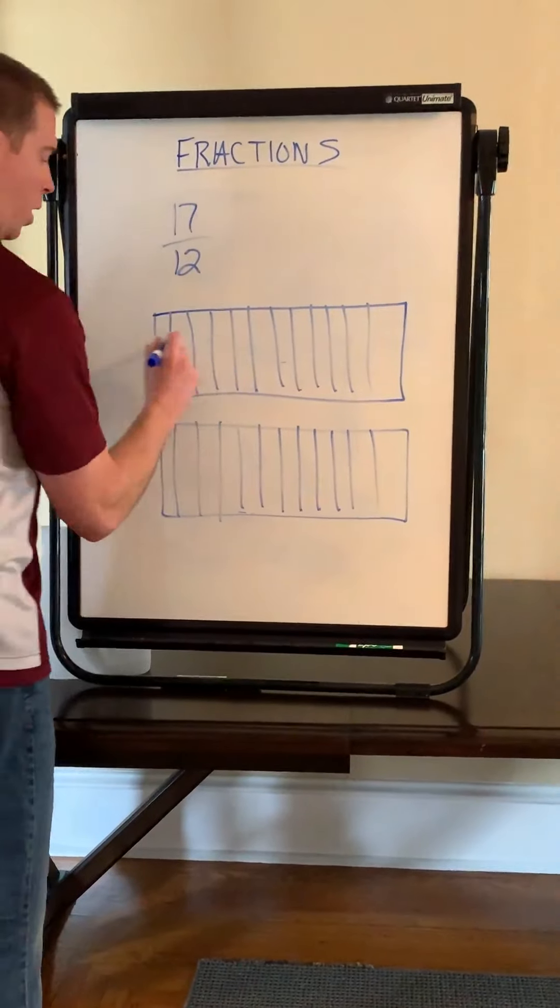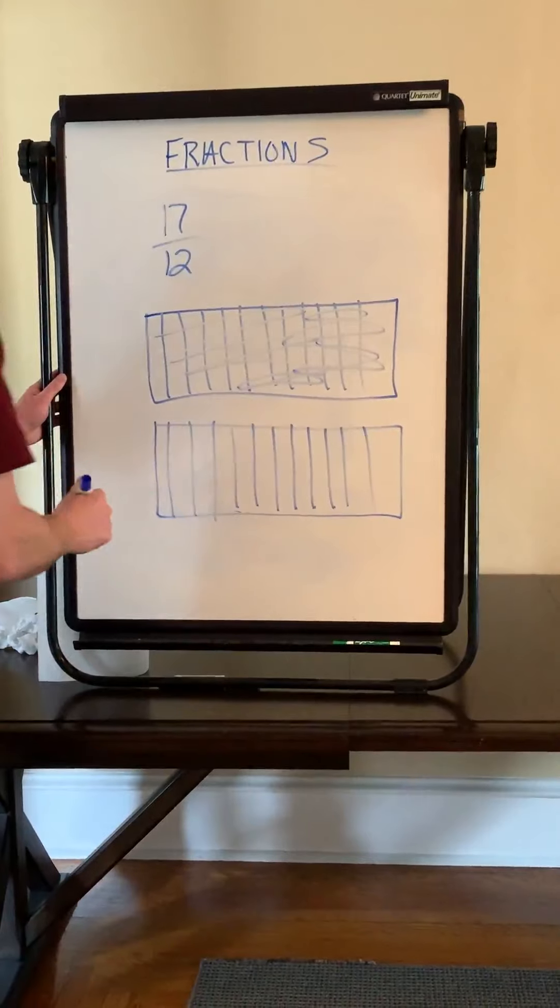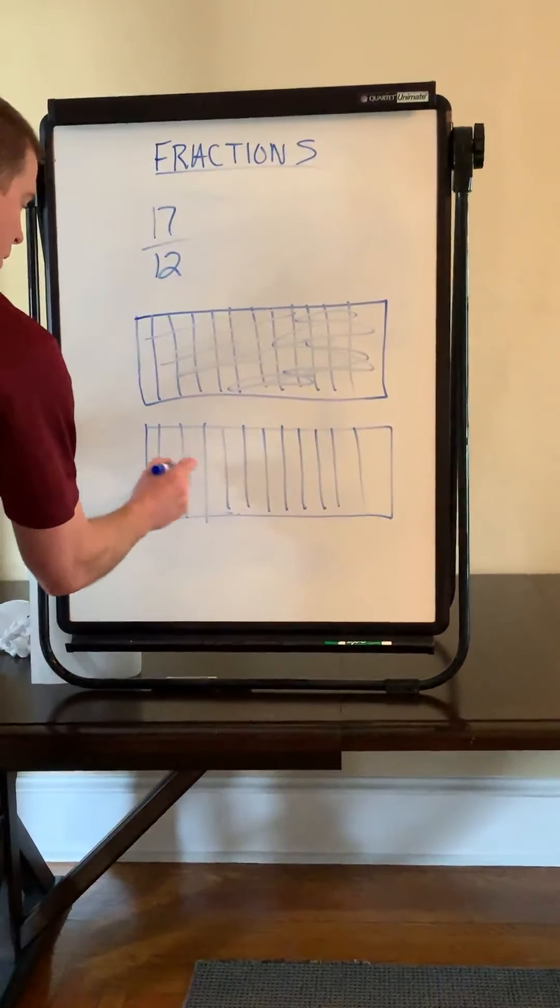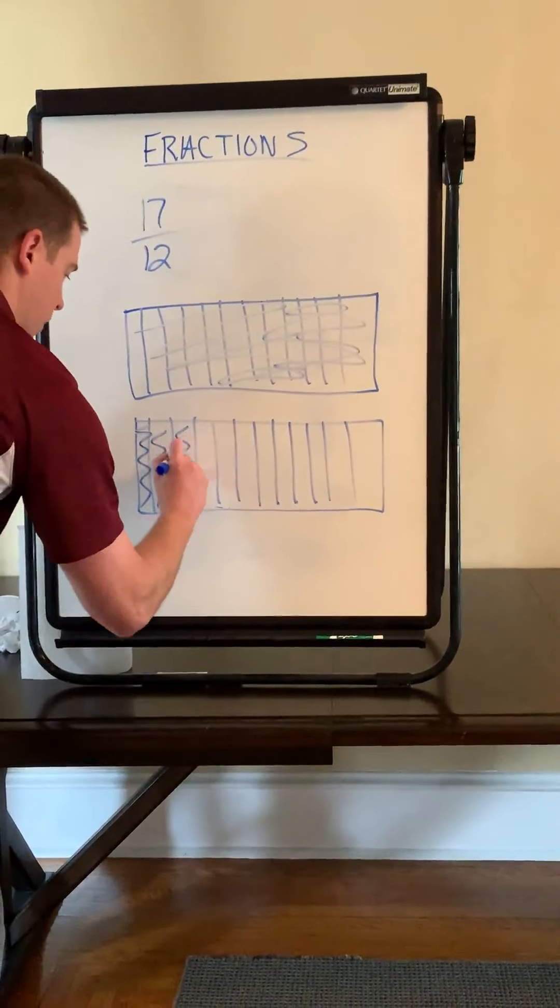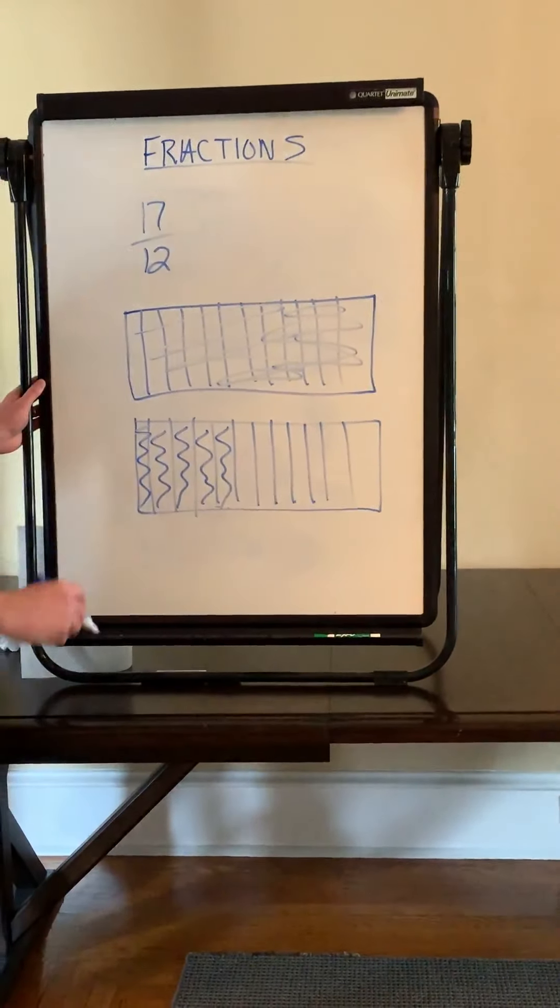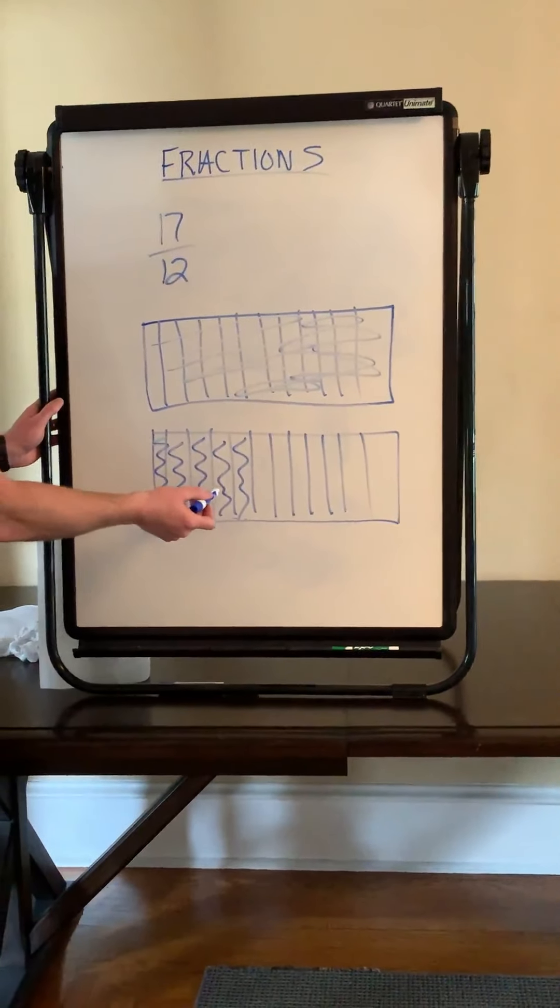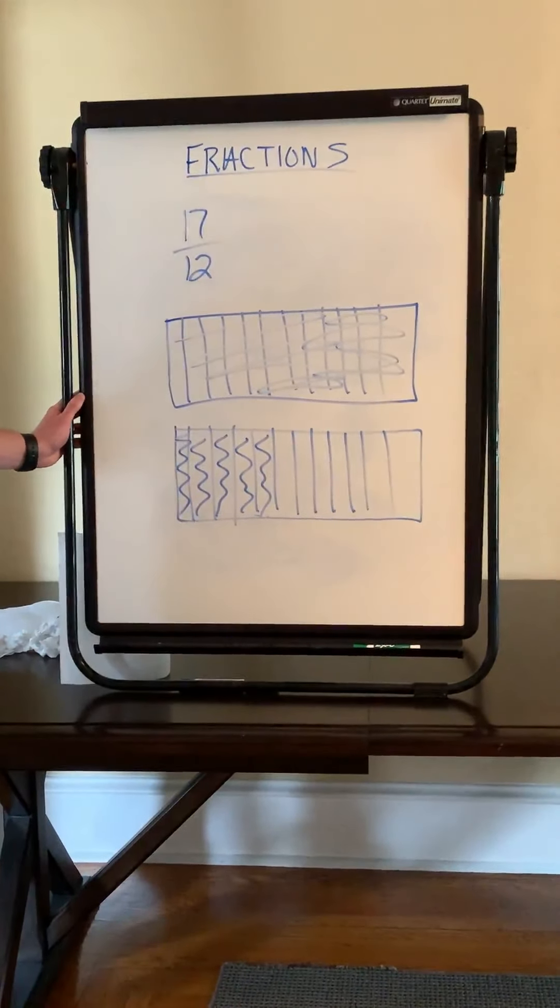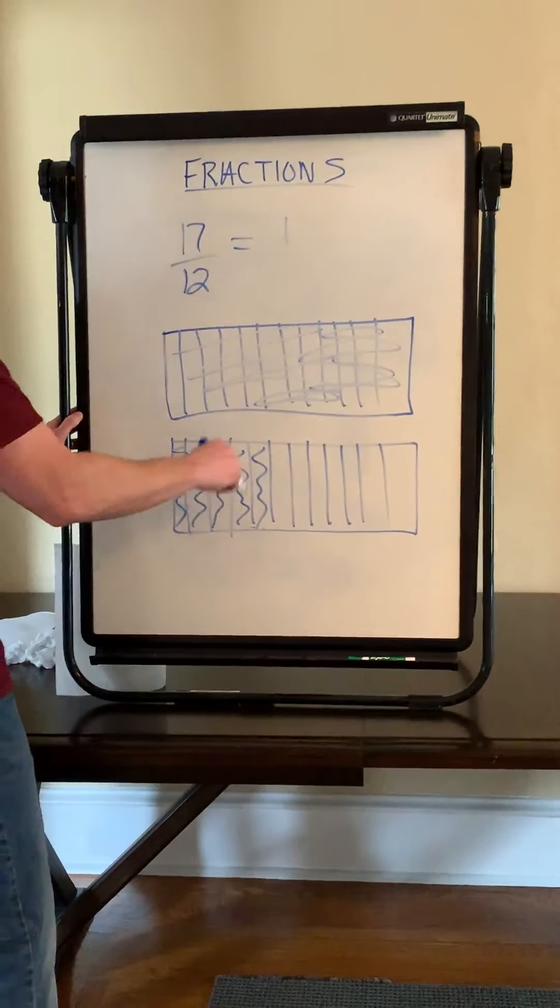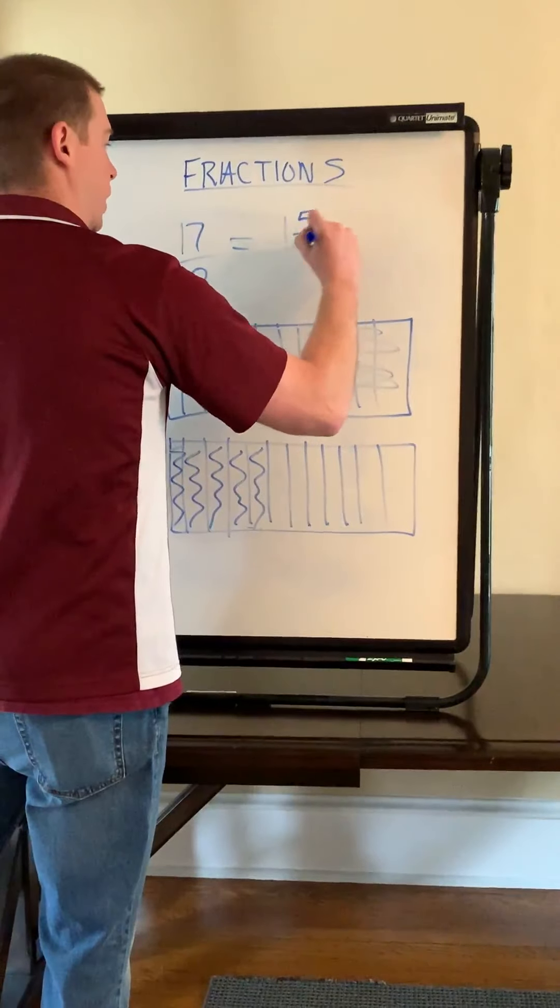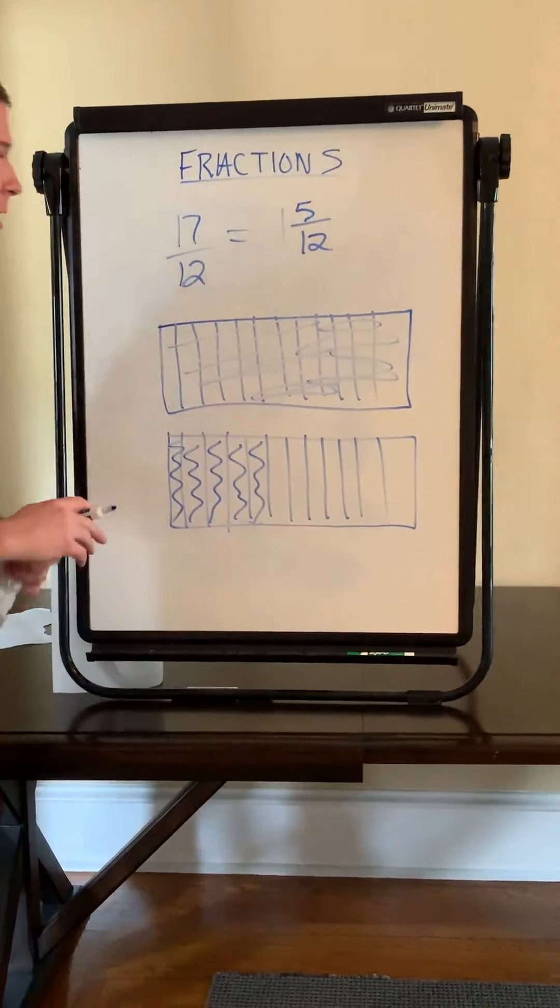All right, and up here I'm going to shade all twelfths. So I have 12/12 shaded. Down below I'm going to shade, that's 12, this would be 13, 14, 15, 16, 17. So I have 12/12 shaded here, 13, 14, 15, 16, 17. Now I can just look at my model. I have one whole rectangle filled in. And then down below I have 5/12 filled in. 1 and 5/12. And that is adding fractions.